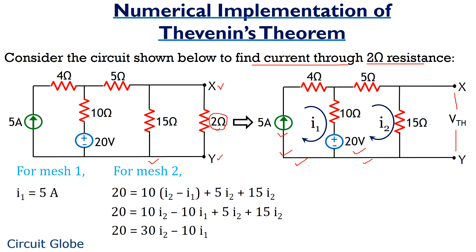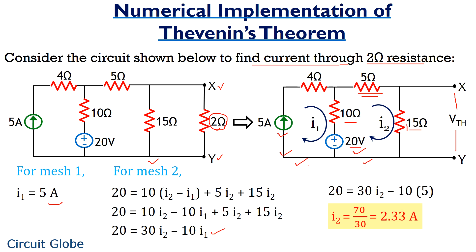When we proceed to apply KVL in mesh 2, we see that this mesh consists of a voltage source of 20 volts, a 10-ohm resistor, a 5-ohm resistor, a 5-ohm resistor, and a 15-ohm resistor. Applying KVL: 20 equals 10(I2 − I1) + 5(I2) + 15(I2). On simplifying, we get 20 equals 30·I2 minus 10·I1. With I1 equal to 5 amperes, on substituting this value we get I2 as 2.33 amperes.